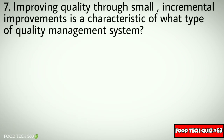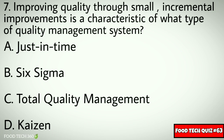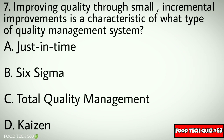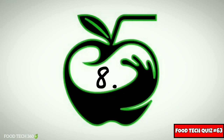Question No. 7. Improving quality through small incremental improvements is a characteristic of what type of quality management system? Options: A. Just in Time, B. Six Sigma, C. Total Quality Management, D. Kaizen. Correct answer: D. Kaizen.